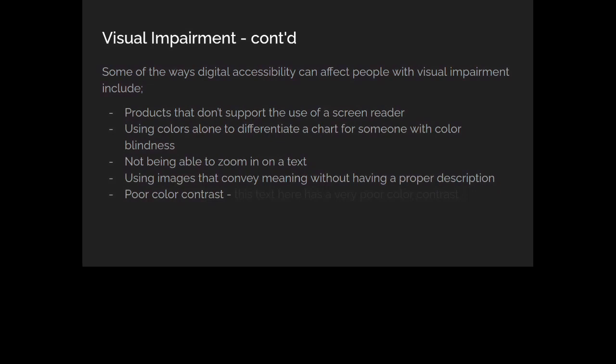Another issue is poor color contrast. When choosing colors for your products, make sure they have very good contrast with the background. For example, text with poor contrast might be very hard to read. You as someone without visual impairments might be able to strain your eyes a bit, but there are people who won't even be able to see it. So make sure text has good color contrast for users with visual impairment.